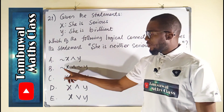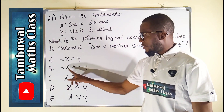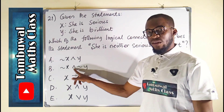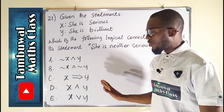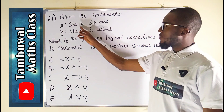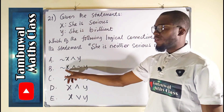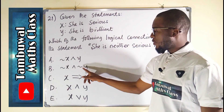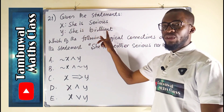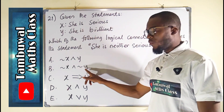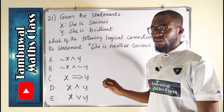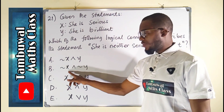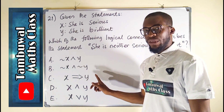The second option has negation here and negation here, and this is also an AND statement. Because X stands for 'she is serious,' negation of X stands for 'she is not serious.' Y stands for 'she is brilliant,' therefore negation of Y stands for 'she is not brilliant.' So this means: she is not serious and she is not brilliant.